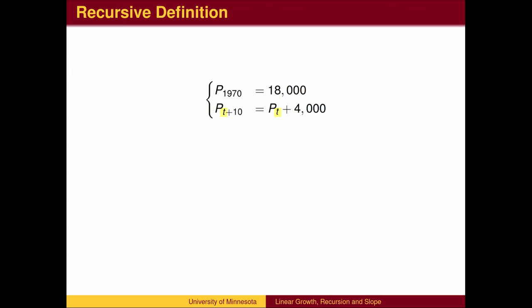The subscript variable, in this case t for time, is called the independent variable, and will be measured on the horizontal axis in the graph.